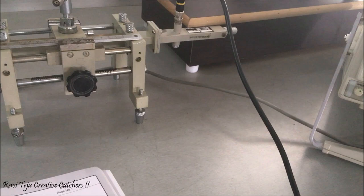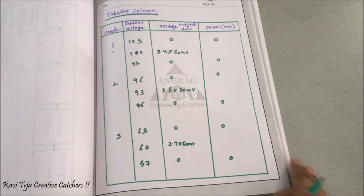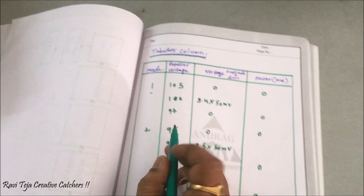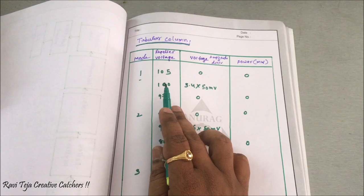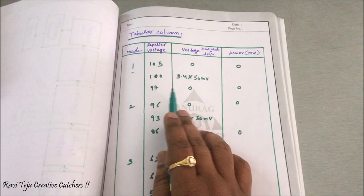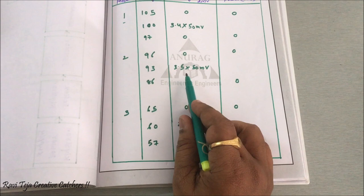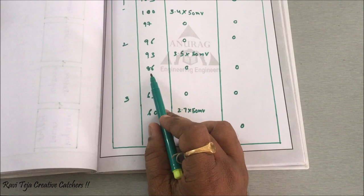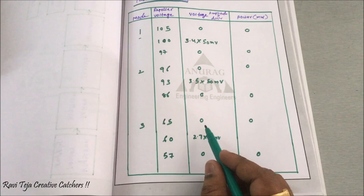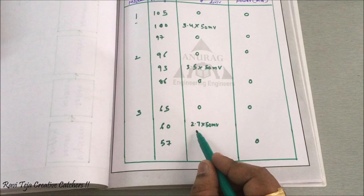Summary of readings: Mode 1 — starting at 105 V, peak at 100 V with 3.4 × 50 mV, end at 97 V. Mode 2 — starting at 96 V, peak at 93 V with 3.5 × 50 mV, end at 86 V. Mode 3 — starting at 65 V, peak at 60 V with 2.7 × 50 mV, end at 57 V. This is how to calculate a minimum of three modes.